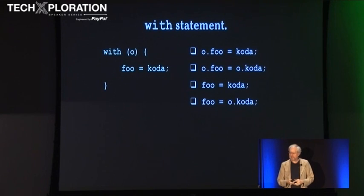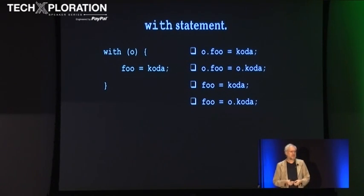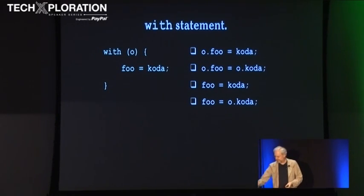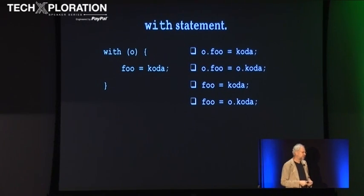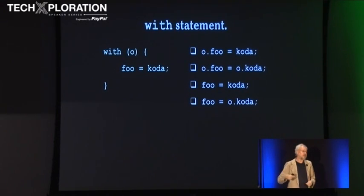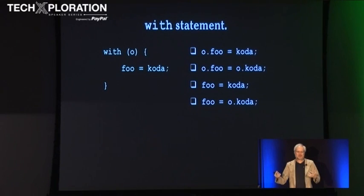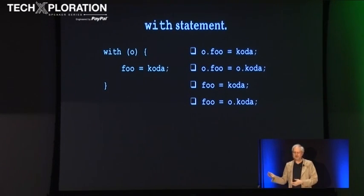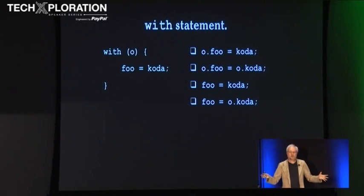Another good intention was the with statement. Here we have a with statement of object O over foo equals coda. It's going to expand into one of these four statements — it's a trick question, it could be any of them. There's no way you can tell by reading the program which one it will expand into. In fact, every time this statement executes, it could be a different one. So I recommend not using it. Don't use the with statement. Write the thing it expands into instead.